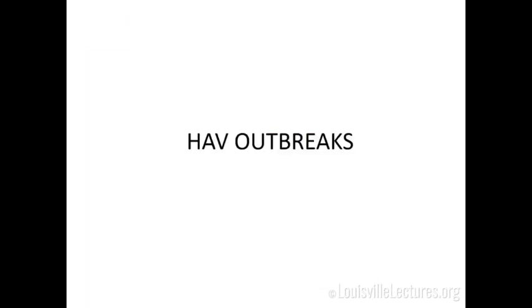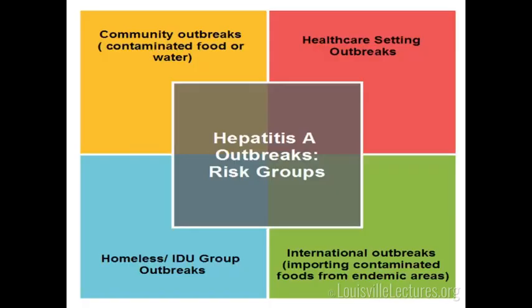The main risk groups for hepatitis A outbreaks include community outbreaks in endemic areas with contaminated food or water, international outbreaks from imported contaminated food, healthcare setting outbreaks, and special groups — homeless individuals and illicit drug users. The current multistate outbreak falls primarily in that last category.